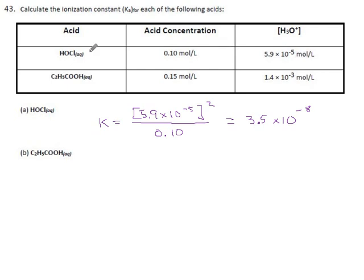C2H5COOH is propanoic acid, three carbons propane and then the carboxyl group makes it propanoate. The H3O+ is 1.4 times 10 to the minus 3, square it because we're using that number twice, once for the hydrogen once for its conjugate base. The original acid was 0.15, and then we calculate. This is getting two significant digits, so 1.3 times 10 to the minus 5.